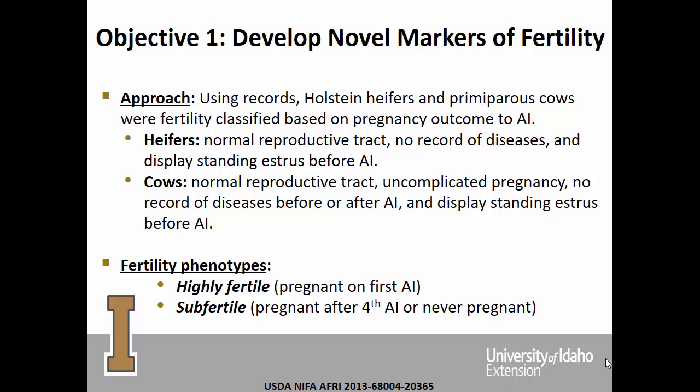You could say: real dairies aren't that way — cows have transition problems, get sick, get dystocia. That's true. We have one strategy for this grant, and when Dr. Venuto talks, they have a different strategy that included animal health. Our fertility phenotypes are at the extremes: highly fertile means the animal is pregnant on first AI, and subfertile means she's pregnant after the fourth service or never pregnant.